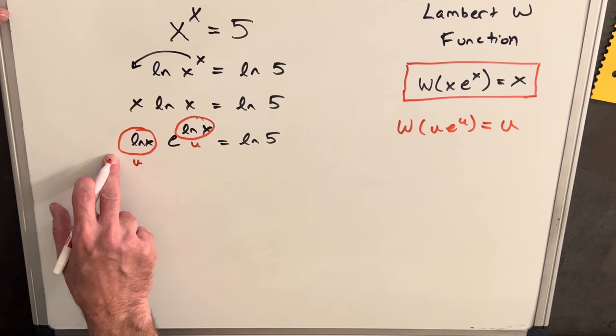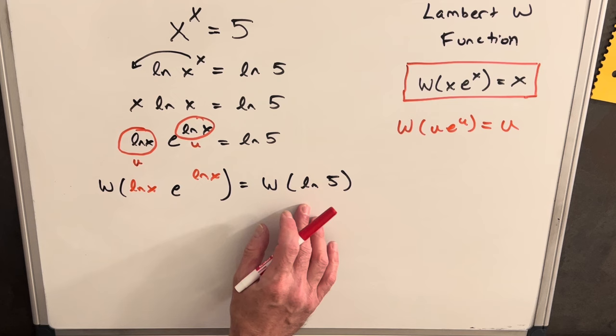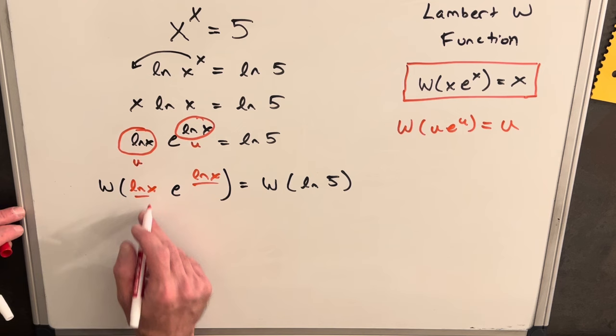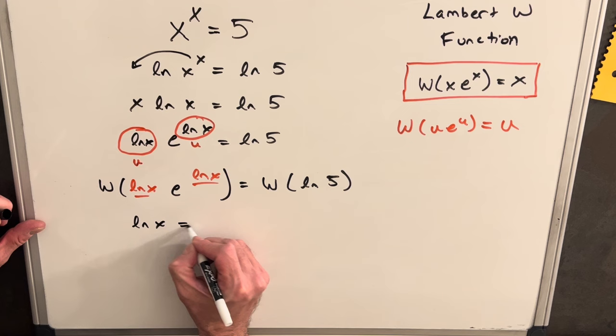So then we've applied the Lambert W function on both sides of the equation. And this is going to allow us to pull out just these inputs. So we're going to be able to pull out ln x. So here on the left side, we'll have just ln x equals W ln 5.